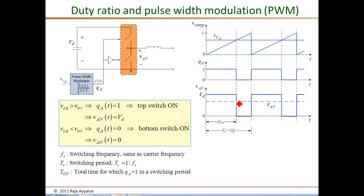In a switching converter, the various control objectives are achieved by controlling the average of the output of one or more power poles. This slide deals with the actual implementation or the mechanism by which control of the power pole is achieved.